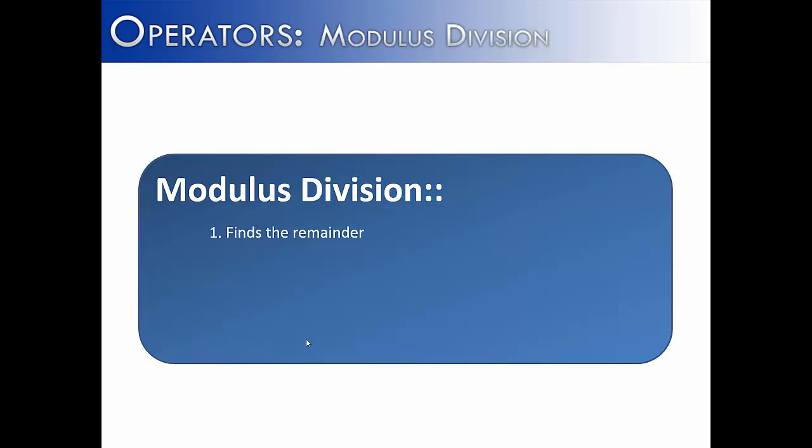So modulus division or remainder division in Java finds the remainder. It is usually used with integer division, although it can be used with real division. And don't forget, with integer division, we just lop off the decimal place. And because we lop off the decimal place, we need modulus division to give us what that remainder is that we've just lopped off. A common use for modulus division is to find whether a number is odd or even. If you take a number modulously divided by 2, if it returns a 1, it's odd. If it returns a 0, it's even.